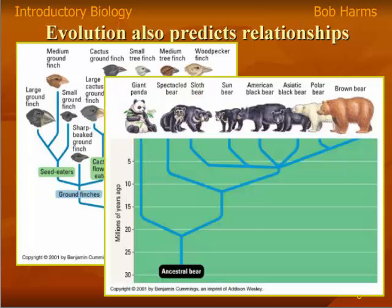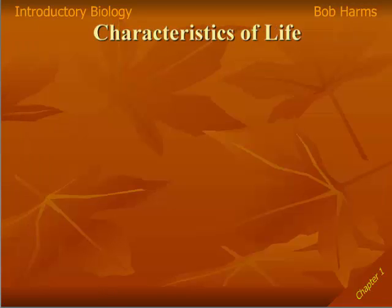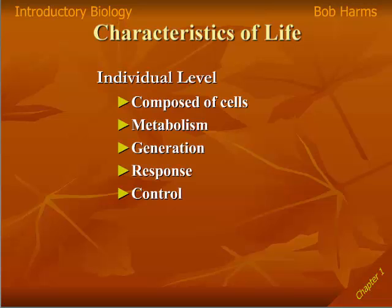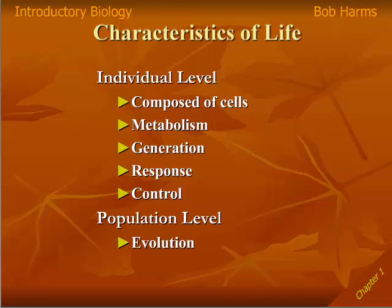Here's a similar example looking at different species of bears. What we oftentimes do is draw these what are called evolutionary trees — very similar to a family tree — showing how different species are related to each other, who are close relatives and who are distant relatives. In this case, within the bears, the panda is the most distant relative, the most different from all those other bears. To wrap up: it's very difficult to define life, so instead of defining it, we talk about characteristics of life. At the individual level, individuals are composed of cells, and individuals have metabolic characteristics, generative characteristics, and response and control characteristics. At the population level, living populations evolve or change over time.